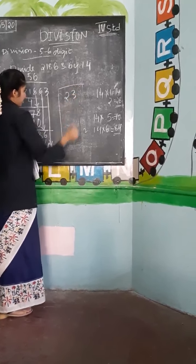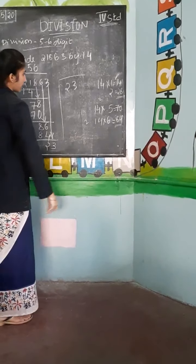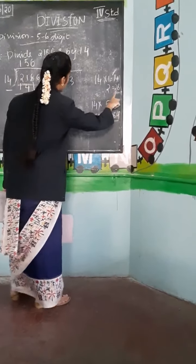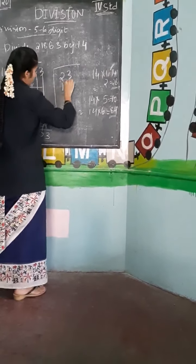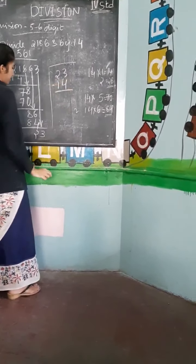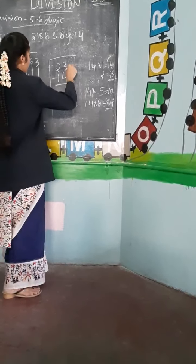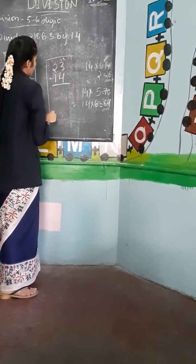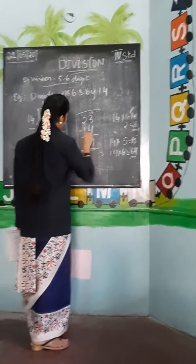We have 23. In the 14 times table: 14 ones are 14, 14 twos are 28. 28 is greater than 23, so we take 14 ones are 14. Subtract: 3 minus 4 — borrow, becomes 13 minus 4 equals 9. 1 minus 1 is 0. So the coefficient is 1,556 and remainder is 9.